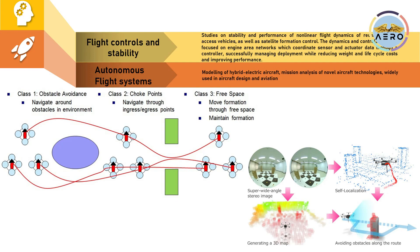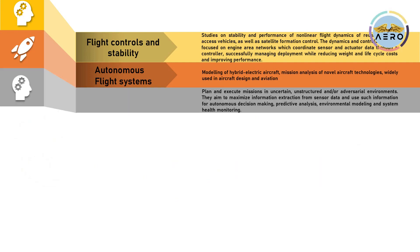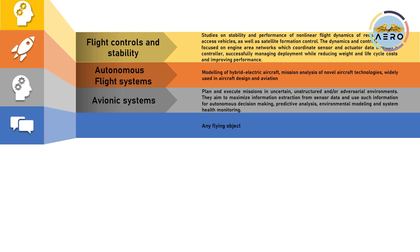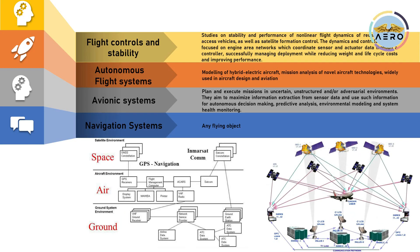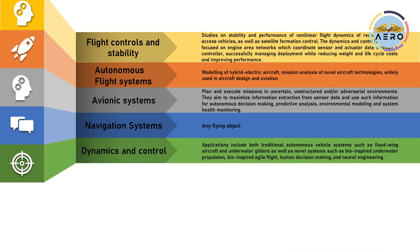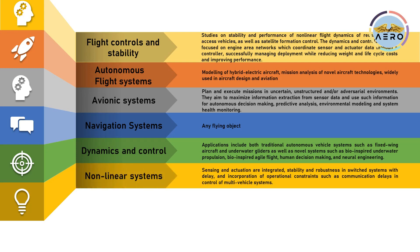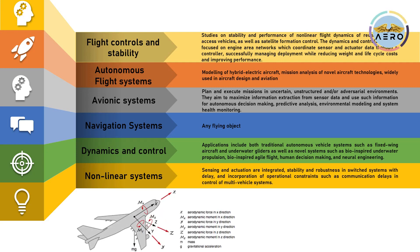In avionics, you can maximize information extraction from sensor data to make decisions and monitor system health. Navigation systems for flying objects — from airplanes and helicopters to missiles — and instrumentation also play a wide role. Dynamics and control of manned and unmanned air vehicles is another rich area. Notably, non-linear systems research integrates sensing and automation with switched stability and robustness, applicable to automated vehicle systems such as fixed-wing aircraft, underwater gliders, and human flights.